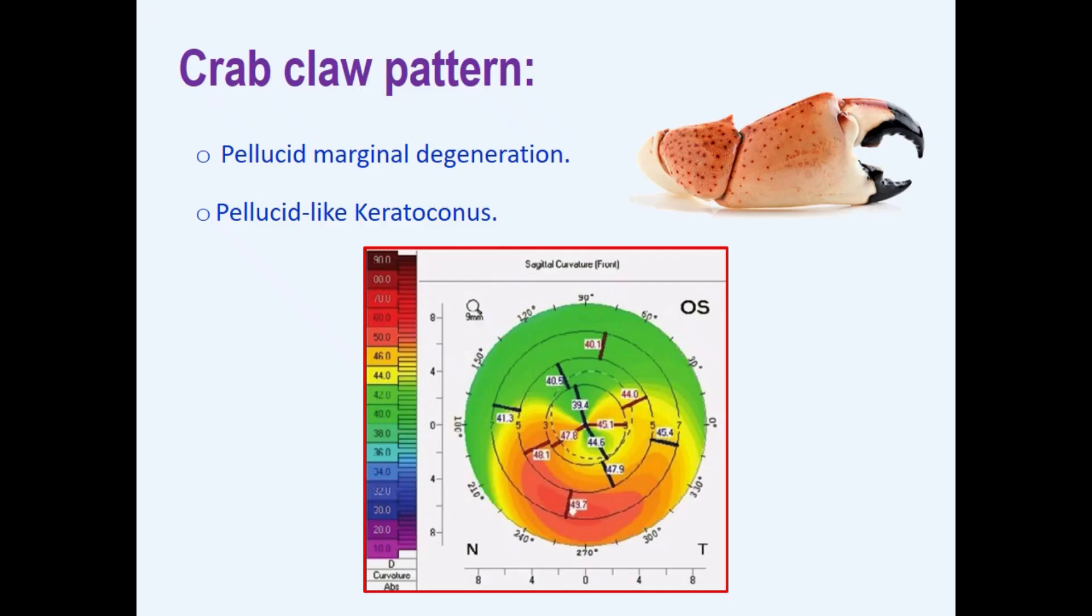What is a crab claw? This crab claw or kissing bears pattern is classically encountered in pellucid marginal degeneration and rarely met with in keratoconus. It indicates large amounts of against-the-rule astigmatism with inferior steepening which creates an appearance of a C letter lying on its back.